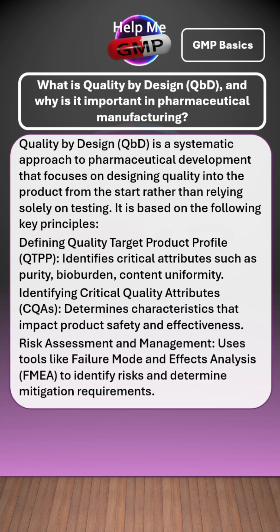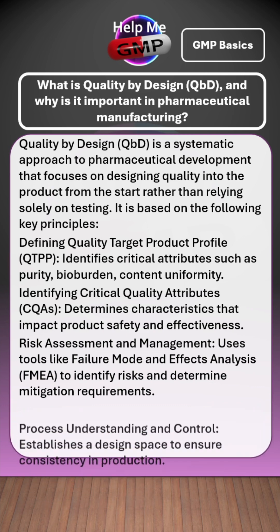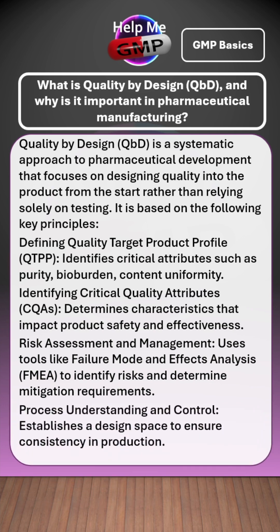Risk assessment and management uses tools like failure mode and effects analysis, or FMEA, to minimise risk. Process understanding and control establishes a design space to ensure consistency in production.